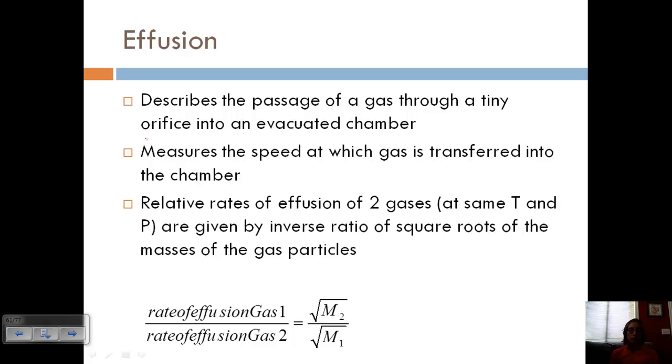So the relative rates of effusion of two gases, and they need to be at the same temperature and pressure, are given by the inverse ratio of square roots of the masses of the gas particles. And this is called Graham's Law of Effusion, where capital M in this case stands for molar mass.